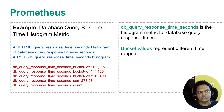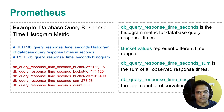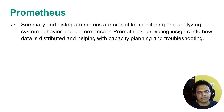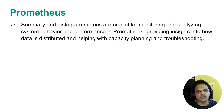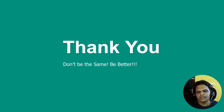The DB query response time in seconds is the histogram metric for database query response time. We have bucket values representing time ranges, the sum of all observed response times, and the count of total observations. The summary and histogram metrics are crucial — they help you analyze system behavior and performance in Prometheus, provide insight into data distribution, and help with capacity planning and troubleshooting. We have now discussed all four metric types in Prometheus: counter, gauge, summary, and histogram. Thank you team, see you next time.